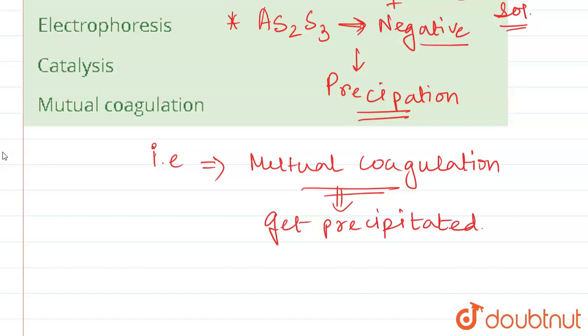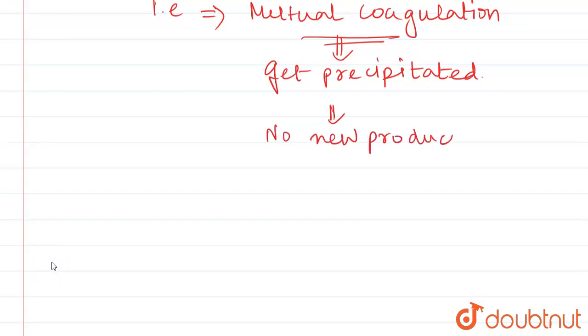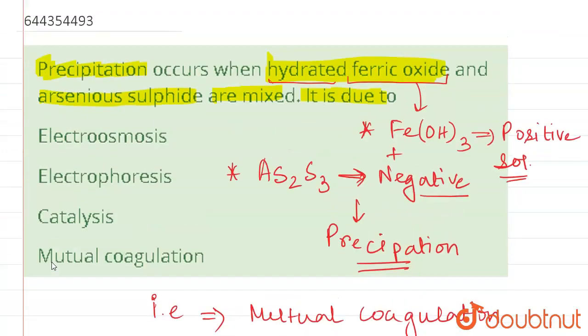Here positive and negative salt mutually coagulate, transfer their ions and get precipitated. There is no new product is formed.